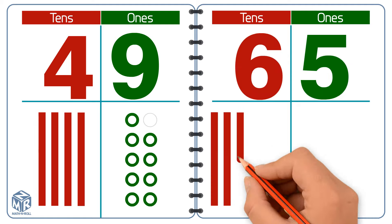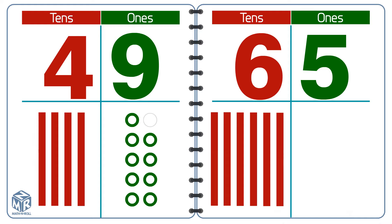The 6 in 65 means six 10s, or 60. The 5 in 65 means five 1s. We can write six 10s and five 1s as 65.